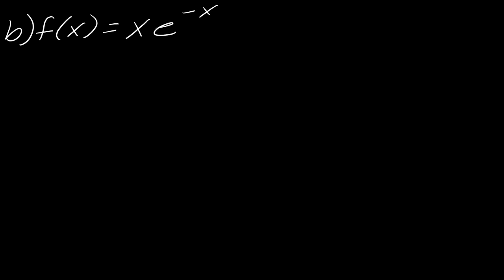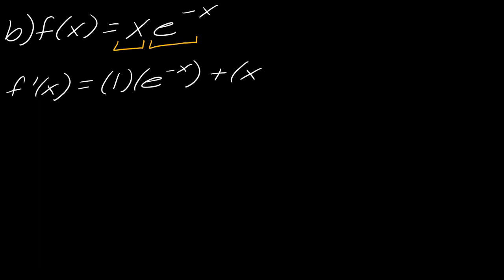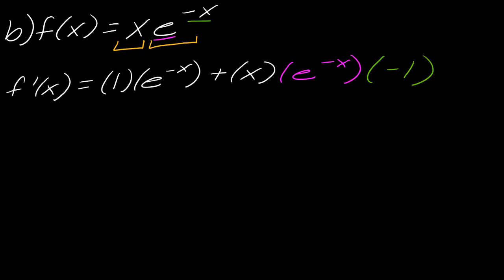Moving on to the next one. For this one we're going to have to use the product rule right away. My two functions are x and e to the negative x. First I take the derivative of x, which is 1, and leave the e to the negative x alone. Then I leave x alone and take the derivative of e to the negative x using the chain rule. The outermost function is e, the innermost is negative x. The derivative of e to the negative x is e to the negative x times negative 1. So this simplifies to e to the negative x minus x e to the negative x.